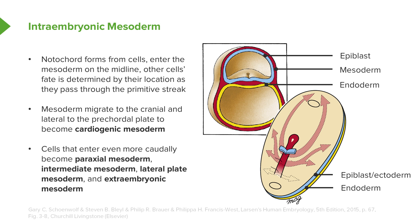Mesoderm that migrates a little bit more laterally will form specialized structures called the paraxial mesoderm, the intermediate mesoderm, and lastly the lateral plate mesoderm. After the lateral plate mesoderm, we've reached a point where we've met the extra-embryonic mesoderm, which does not contribute any tissue to the embryo itself but helps keep us connected to the umbilical cord and placenta.